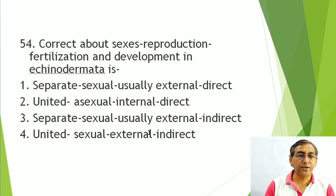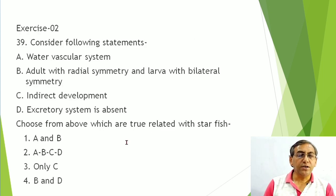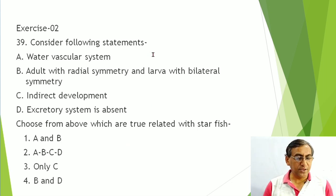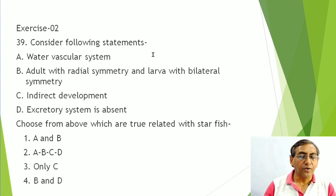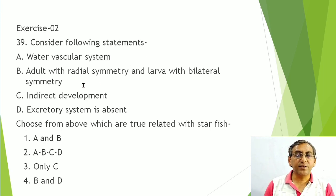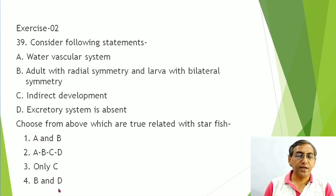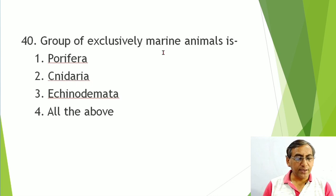Sexes are separate, reproduction is sexual, fertilization is external, and development is indirect — these are four features of Echinodermata to remember. For a question on true statements about starfish: water vascular system present ✓, adult with radial symmetry and larva with bilateral symmetry ✓, indirect development ✓, excretory system absent ✓ — all four are correct, so the answer is A, B, C, D.